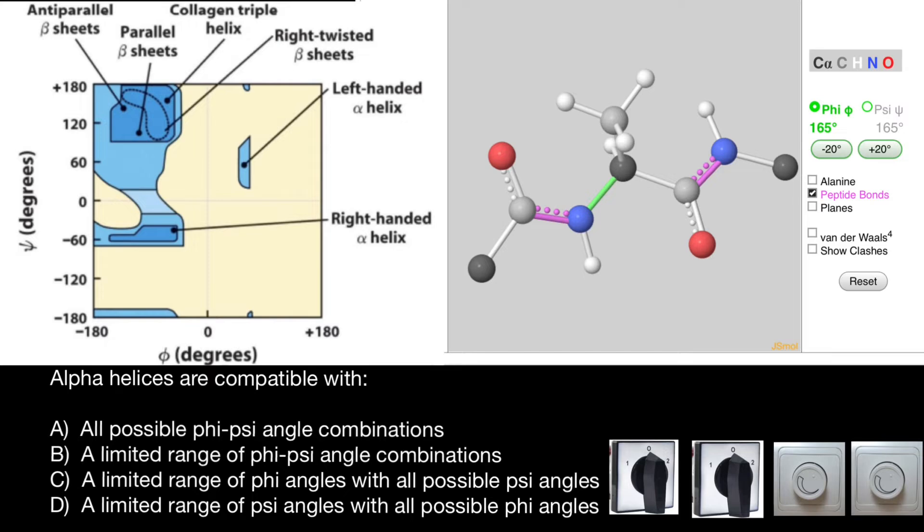So peptide bonds don't rotate. All this group of atoms are in the same plane. And if they're going to rotate, they're going to rotate together.